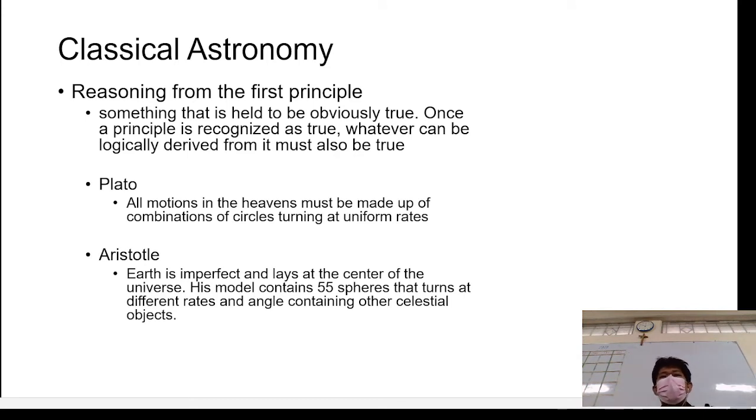While for his student Aristotle said that the Earth is at the center of the universe, but it is also imperfect. So it has at least 55 spheres that surrounds the Earth. And instead of uniform rates, different rates. For him, there are changes in positions of the stars and objects in the spheres. So for him, probably they turn at different rates and angle. So those known planets before, those known stars at that time, they must move at different angles and speed or rate.